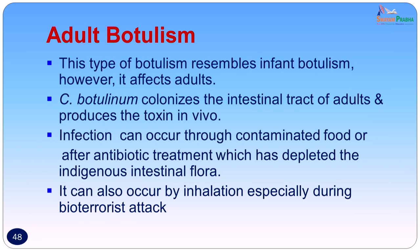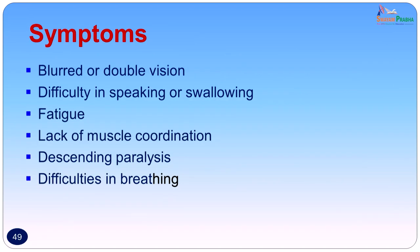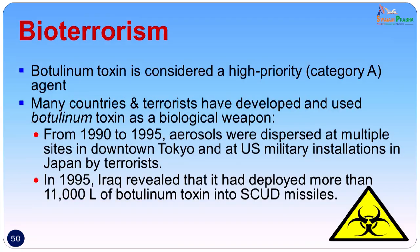The symptoms of adult botulism are blurred or double vision, difficulty in speaking or swallowing, fatigue, lack of muscle coordination, descending paralysis, and difficulty in breathing. Botulinum toxin is considered a high-priority category A agent for bioterrorism. Apart from being a natural disease, one must keep in mind that a cluster of cases could be due to bioterrorism. Many countries and terrorist organizations have developed and used botulinum toxin as a biological weapon. From 1990 to 1995, aerosols were dispersed at multiple sites in Tokyo and at US military installations in Japan by terrorists. In 1995, Iraq revealed it had deployed more than 11,000 liters of botulinum toxin into Scud missiles.